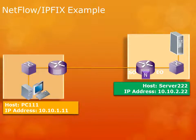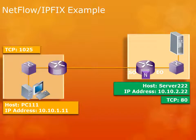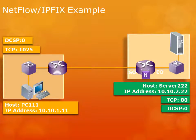First thing we do is enable NetFlow on the router — in this case on the router in our data center, closer to the server. When we turn on NetFlow, we cache information about conversations passing through that router. Our user is going to do his connection over TCP 80, with a high random port of 1025, and let's say they're both using DSCP 0. Packets come from our user through the router into the server.